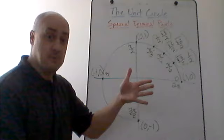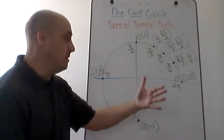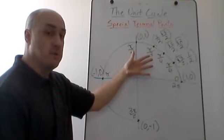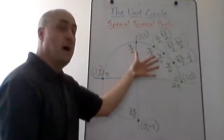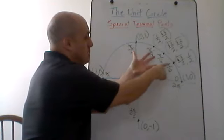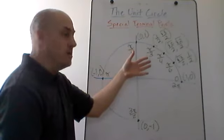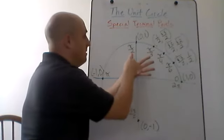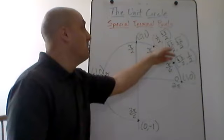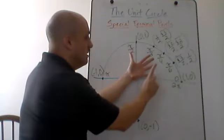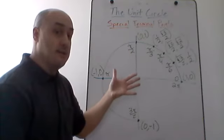To do the trig hand, pick up your left hand so that the palm is facing you. Your left hand represents the first quadrant of the unit circle. The pinky corresponds to the positive x-axis (t = 0), the thumb corresponds to the positive y-axis (t = pi over 2), and the three fingers in the middle correspond to pi over 6, pi over 4, and pi over 3.